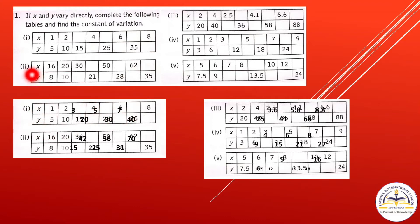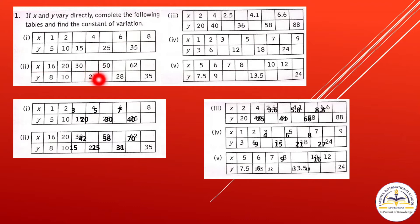For the second table, x and y are given where 8 corresponds to 16. Using the ratio, 10 corresponds to 20, 15 corresponds to 30, so the blank is 15. Then 21 corresponds to 42, 25 corresponds to 50, 28 corresponds to 56, 31 corresponds to 62, and 35 corresponds to 70.